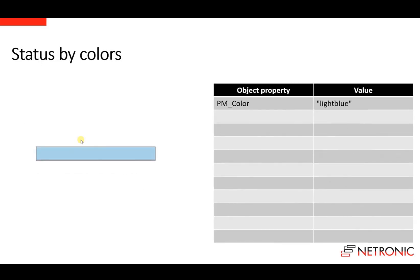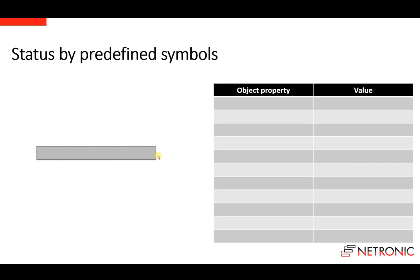The next thing we can do is express the status of an activity or location by using colors. We can use the object property PMColor to set the color of the bar, and we can use the border color to highlight the border of a bar. Sometimes these two colors are not enough, and therefore we have predefined symbols that can be used to visualize the status. We have four status types or four status symbols.